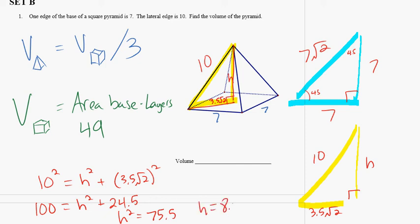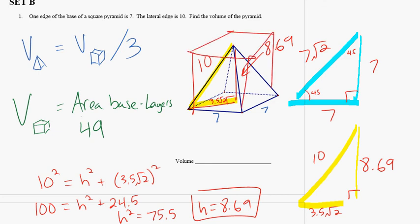So the height of this pyramid is 8.69. If we go back to our original strategy, we know that the volume of the prism that goes around this pyramid is the area of the base, which is 49, times the number of layers, and there are 8.69 layers. So we get the volume of the prism is 425.7646.